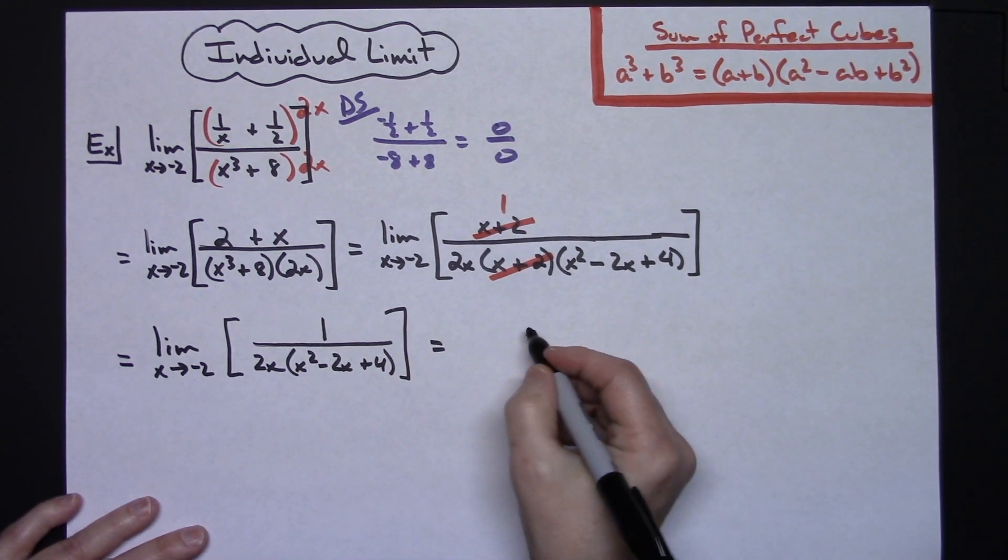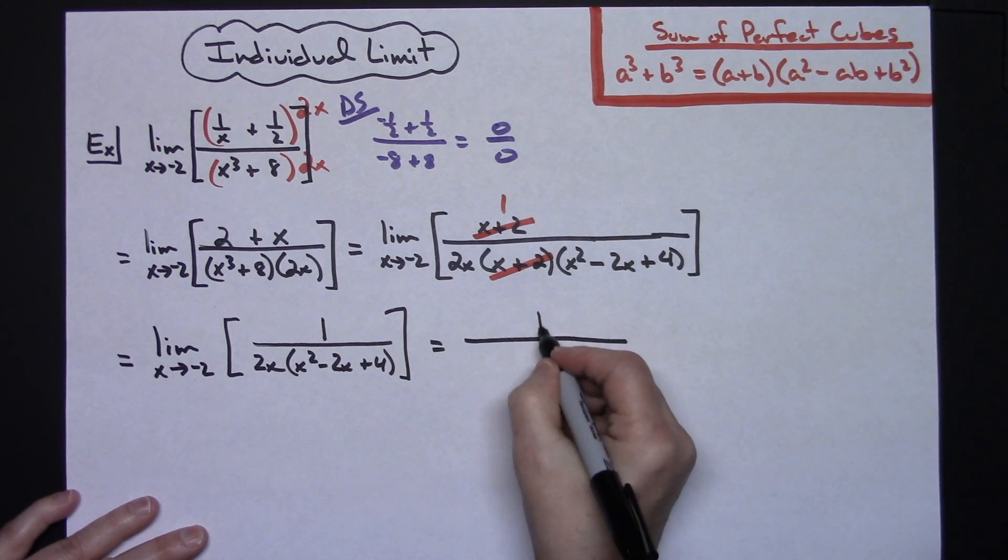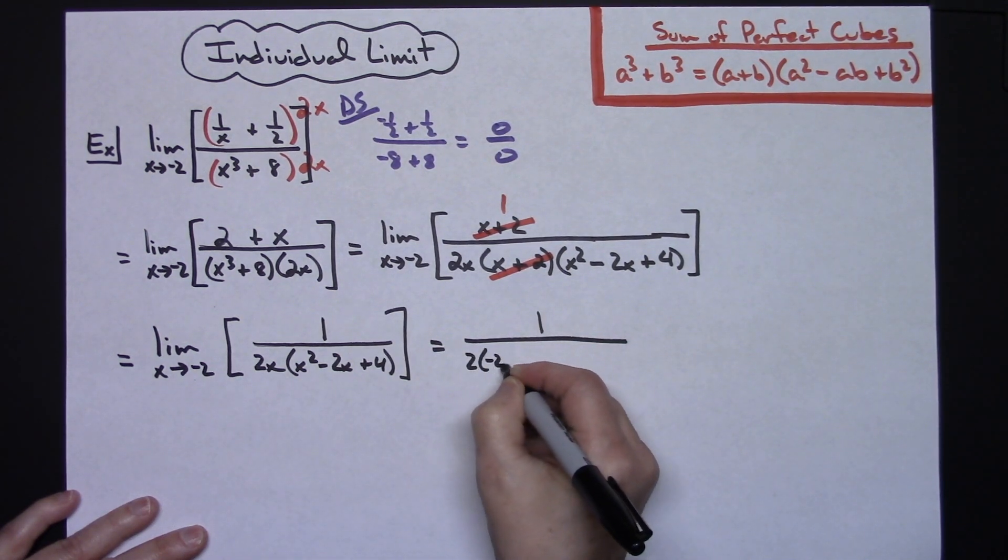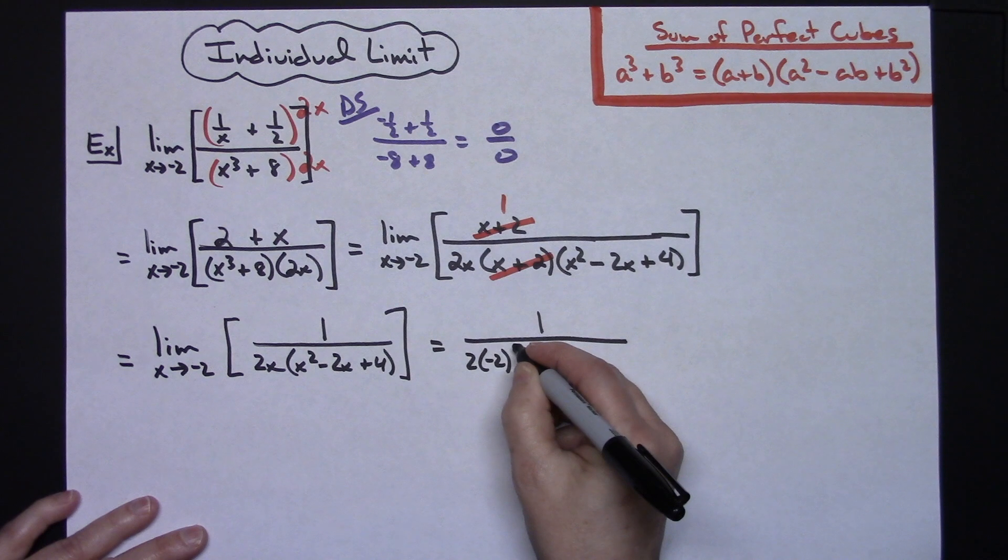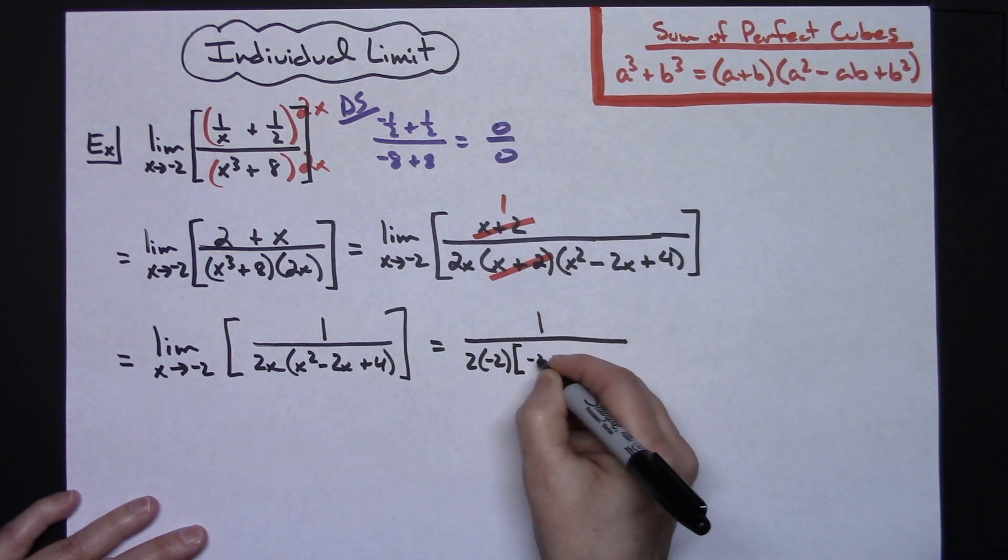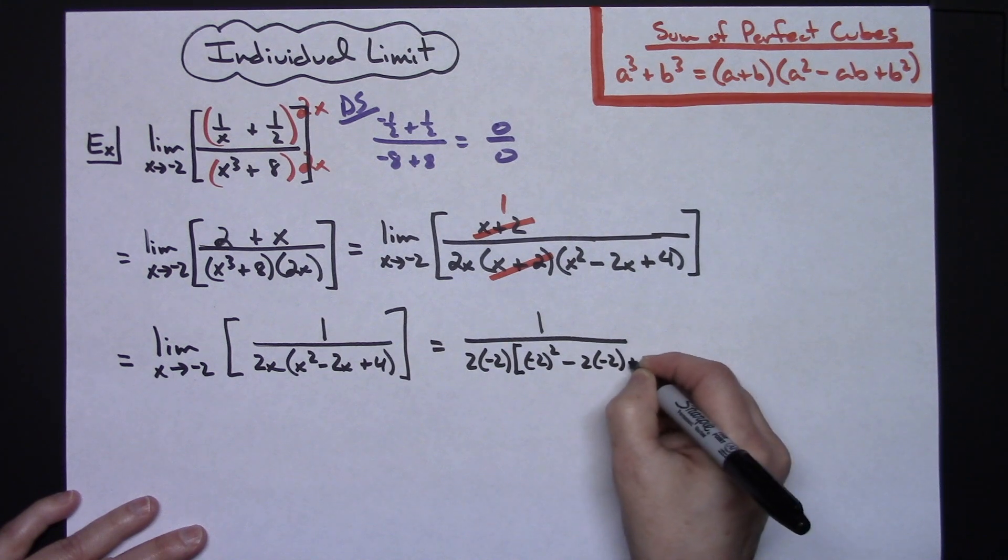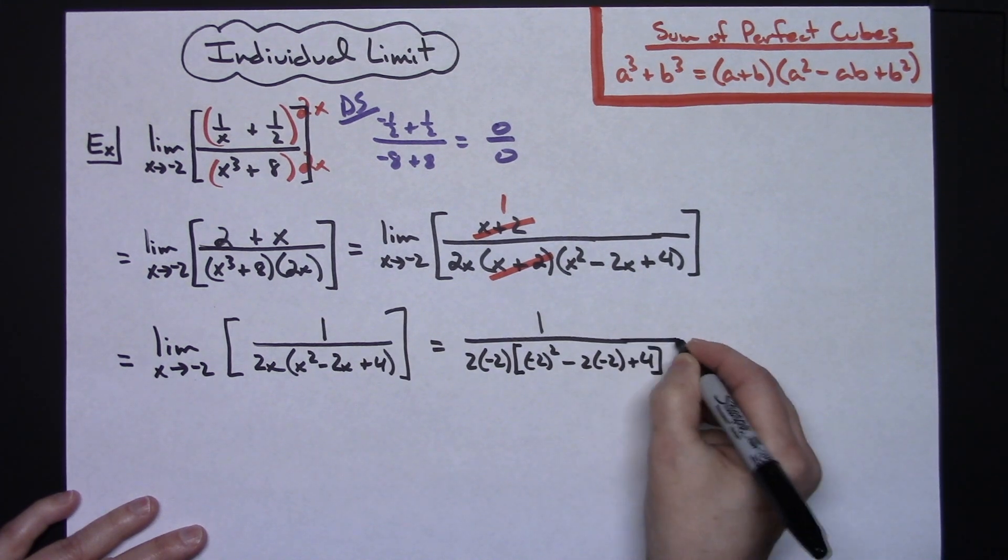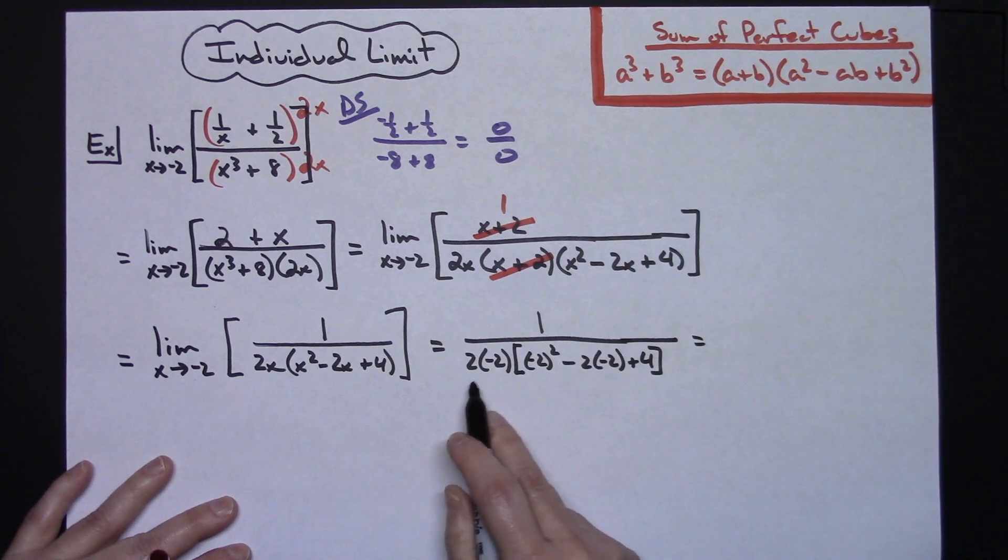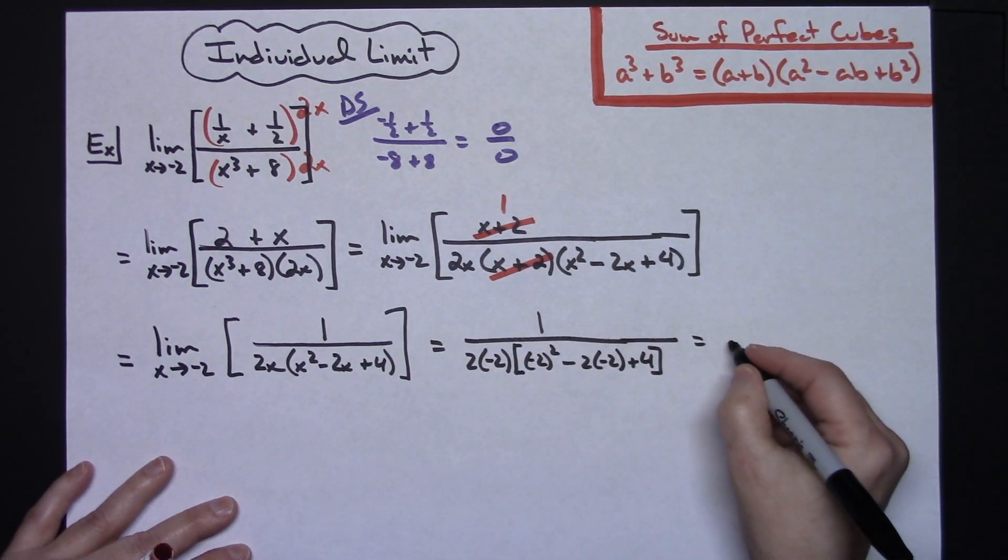Now I'm going to do my direct substitution, plug everything in here. I'll have a 1 in the top. In the bottom I'm going to have a 2 times a negative 2. Inside those brackets right there I'll have a negative 2 squared minus 2 times another negative 2 plus a 4.